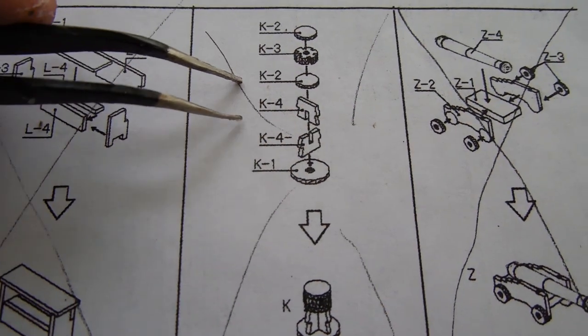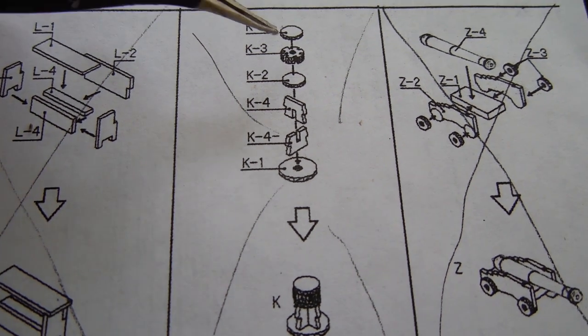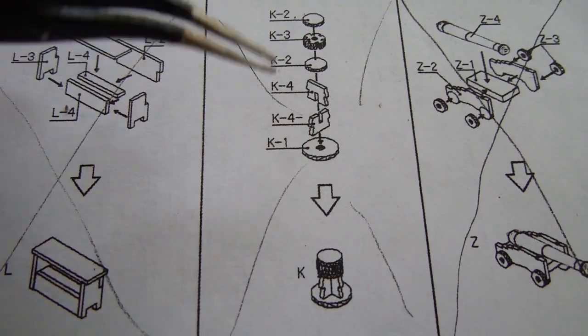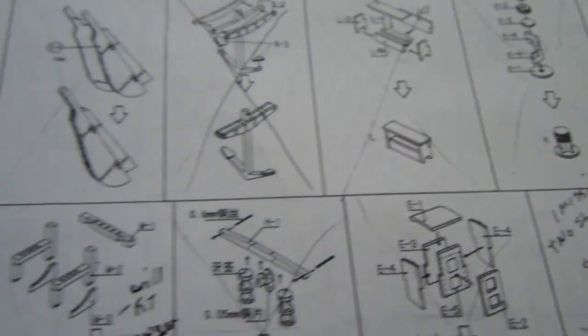On this particular series, K, I've almost never gotten this part out without breaking it. This is really tiny. It's right here and it looks like a gear.